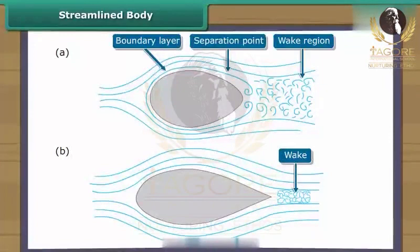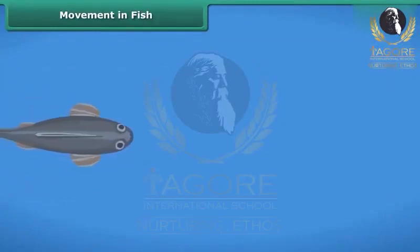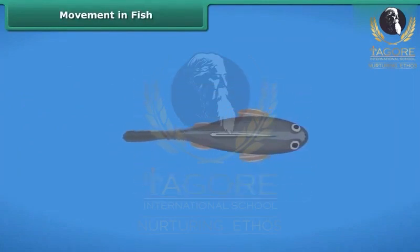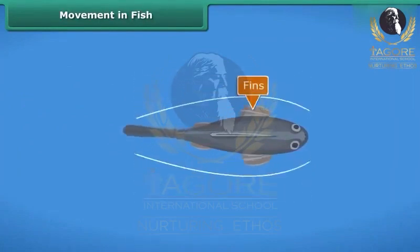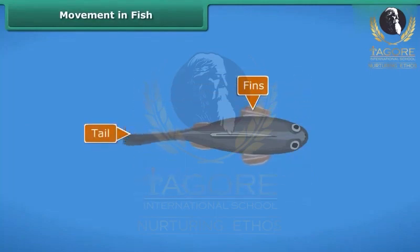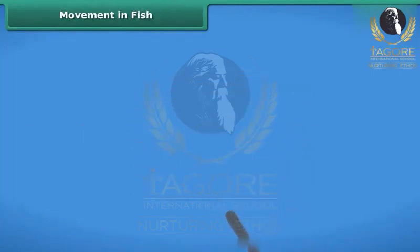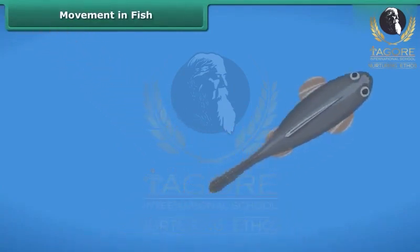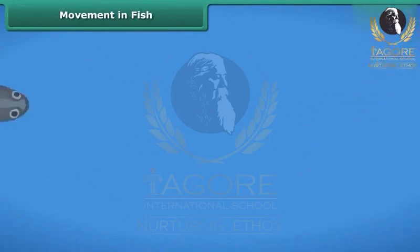The shape of many objects moving through air or water is designed in such a way that friction is reduced between the object and the water or air. This shape is called a streamlined body. Fish have a streamlined body which helps them move fast in water. Fish swim with the help of their fins; the tail moves from side to side and helps the fish swim in the right direction. Some fish move by bending their bodies from one side to another in quick succession, which produces a thrust that helps them move forward.